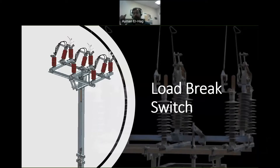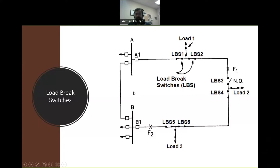Welcome back. Let's answer the three questions I raised. First: what is the difference between a circuit breaker and the load brake switch? Second: why are some switches normally closed and some normally open? Third: what is the functionality of load brake switches in the distribution system? The best way to answer these questions is through a schematic diagram.